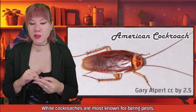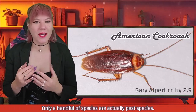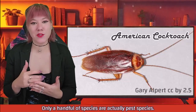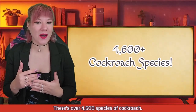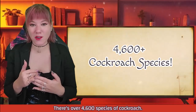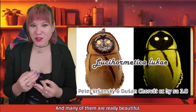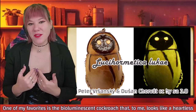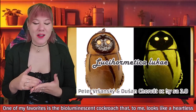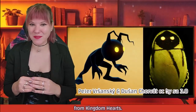Unfortunately, all of these adaptations help them crawl around your cabinets at night too. While cockroaches are most known for being pests, only a handful of species are actually pest species. There are over 4,600 species of cockroach, and many of them are really beautiful. One of my favorites is a bioluminescent cockroach that, to me, looks like a Heartless from Kingdom Hearts.